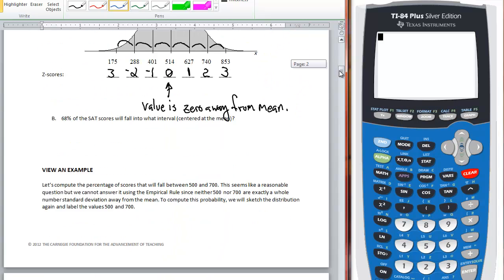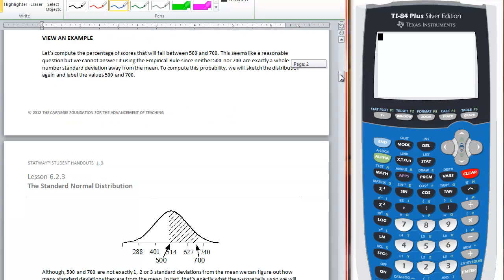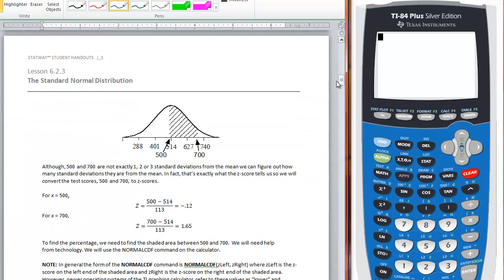So now here is our lovely example that we had in our book. It says although 500 and 700 are not exactly one, two, or three standard deviations from the mean, we can figure out how many standard deviations they are from the mean. In fact, that's exactly what the z-score tells us. So we will convert these test scores, 500 and 700, to z-scores.